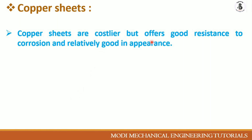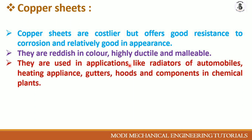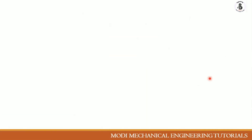Copper sheets are costlier than aluminium but offer good resistance to corrosion and have a relatively good appearance. Copper is highly ductile and malleable, so it can be easily converted into the desired shape and size. Copper sheets are used in applications like radiators for automobiles, heating appliances, gutters, hoods, and components in chemical plants.